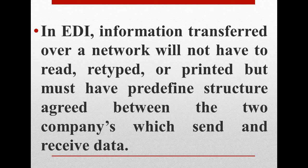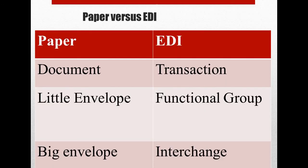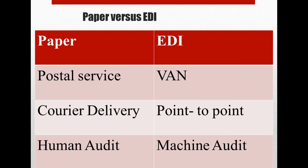In EDI, information transferred over a network does not have to be read, retyped, or printed, but must have a predefined structure agreed between the two companies that send and receive data. These two companies or groups that exchange information through EDI are called trading partners. Before EDI, all businesses were paper-based. In the paper-based system, physical envelopes and courier delivery are used, whereas in EDI, WAN is required with point-to-point communication and machine-based audit instead of human audit.